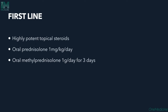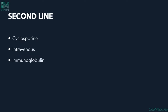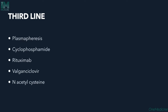The mainstay of therapy is corticosteroids — topical, oral, or IV. For mild disease, highly potent topical steroids suffice. For moderate-severe disease, oral prednisolone 1 mg/kg/day or methylprednisolone 1 g/day for 3 days is used. Second-line options include cyclosporine and intravenous immunoglobulin. For steroid-dependent patients, steroid-sparing agents are used. Third-line options include plasmapheresis, cyclophosphamide, rituximab, valganciclovir, and N-acetylcysteine.